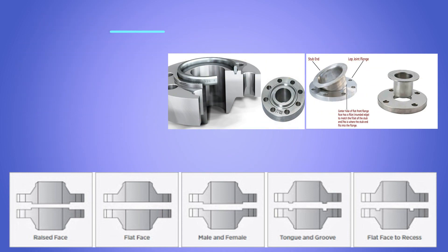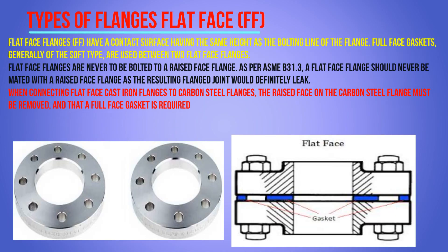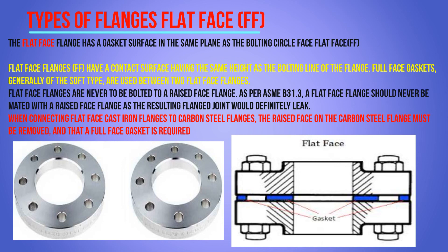The flat face flange has a gasket surface in the same plane as the bolting circle face of the flange. The contact surface has the same height as the bolt line of the flange. Full face gaskets — generally of the soft type — are used between two flat faces.